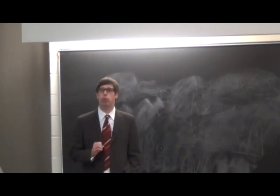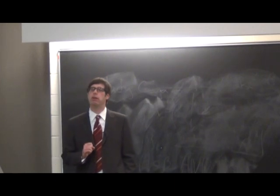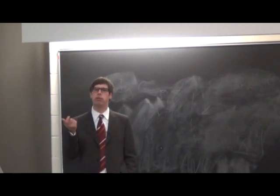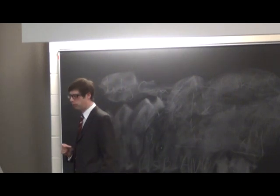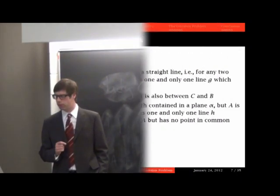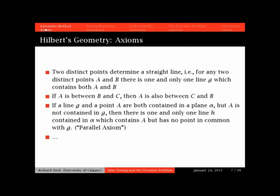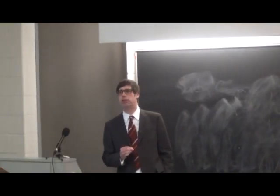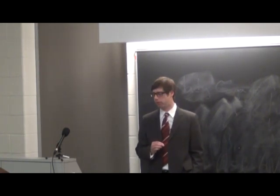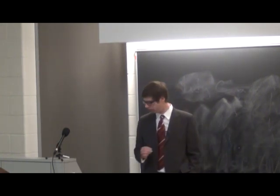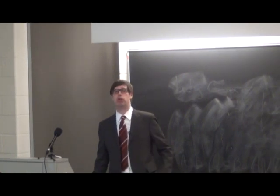Then an axiom about betweenness, for instance. If A is between points B and C, then A is also between C and B. So betweenness is symmetric in the second and the third argument. And then the famous parallel axiom, if a line G and a point A are both contained in a plane alpha, but A is not contained in G, so A is a point outside of G, then there is one and only one line H which contains A, so one and only one line through A, which is parallel to G, i.e. it does not intersect G, i.e. it does not have a point in common with G. And as I said, 17 other axioms. So that's the basic idea.